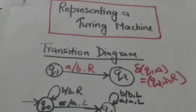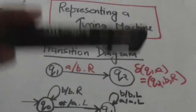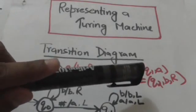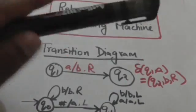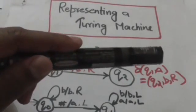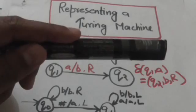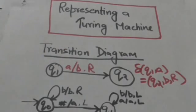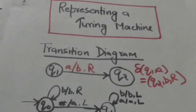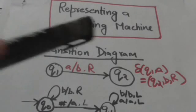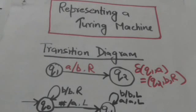If there is a transition where the Turing machine is in state Q1 and reads tape symbol A, it jumps to state Q2, replaces tape symbol A with tape symbol B, and moves its head one position to the right.